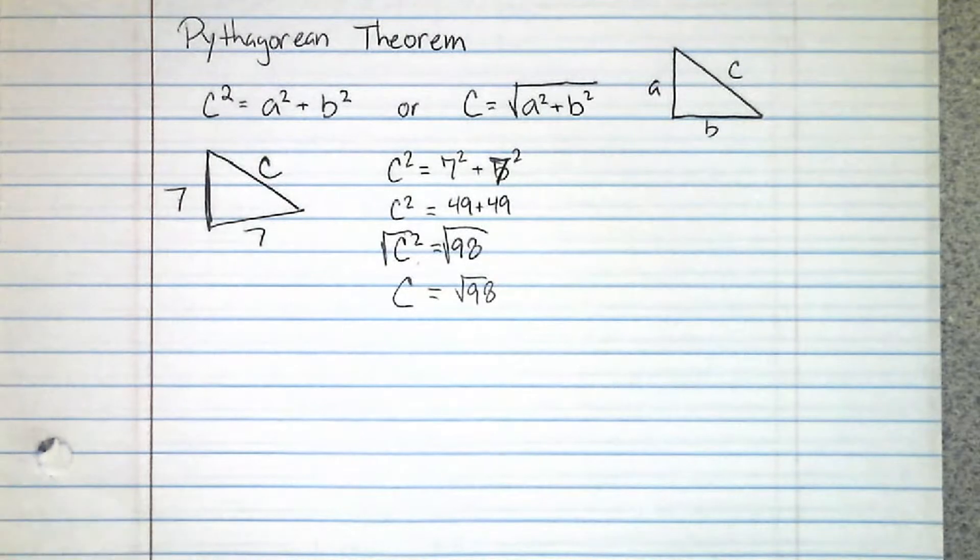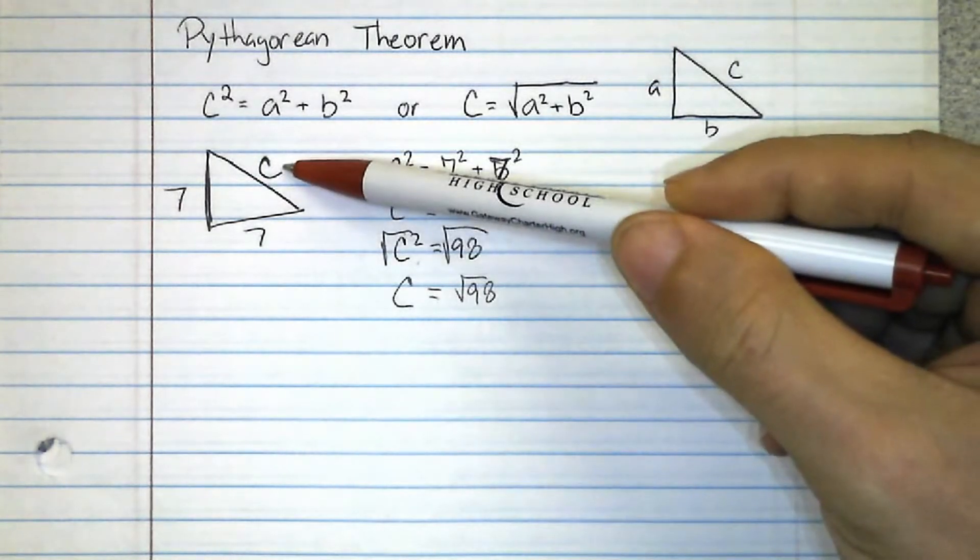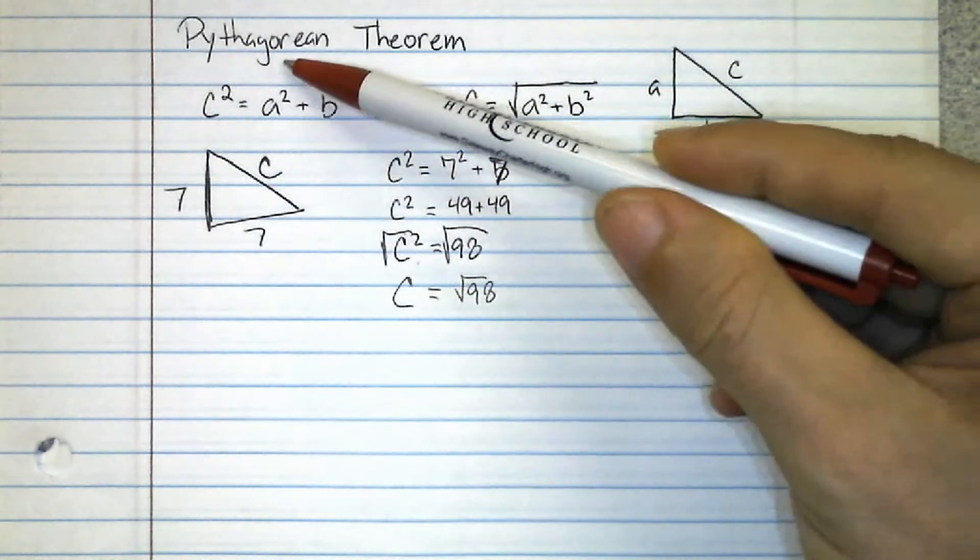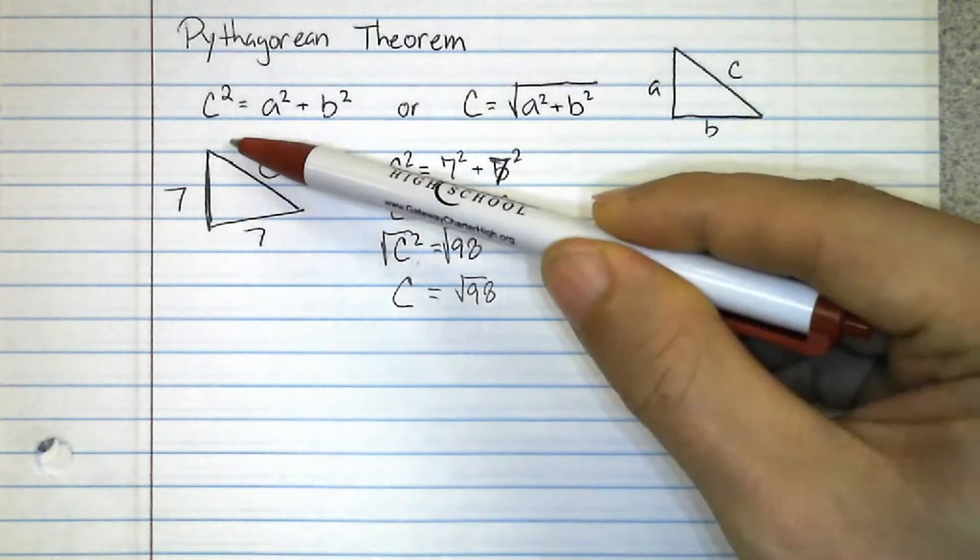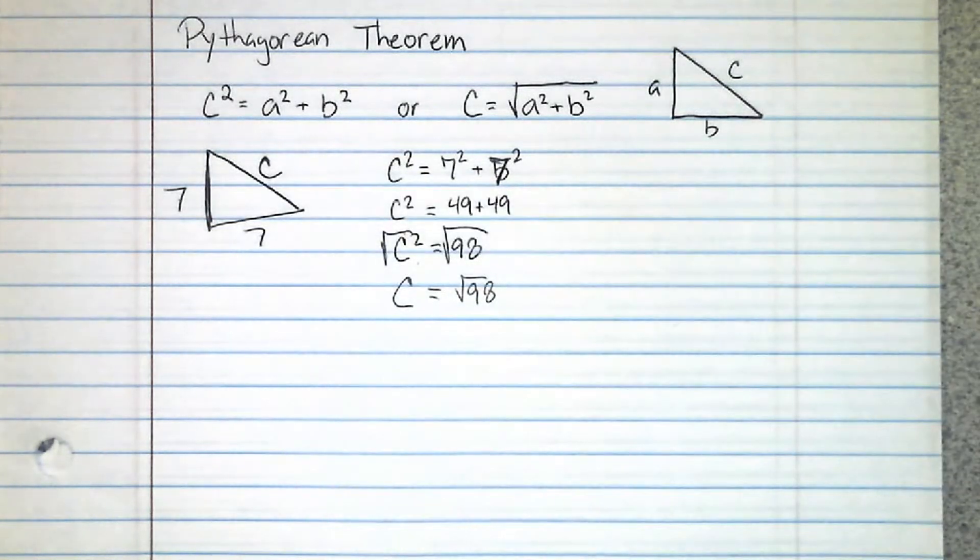Now you're going to get some problems that ask you for the perimeter of triangles and they're going to be missing the hypotenuse length. So you actually will need the Pythagorean theorem so you can find that missing length and then find the perimeter of the triangle.